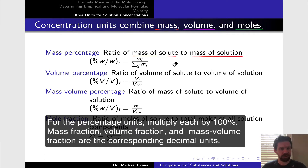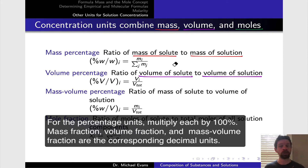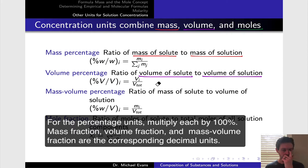Volume percentage is slightly different but similar in spirit. The volume percentage concentration is the ratio of the volume of a solute to the total solution volume. The difference here is that instead of summing over all the volumes in the denominator, we just use a V-total factor. The reason is that volumes, unlike masses, are not additive.